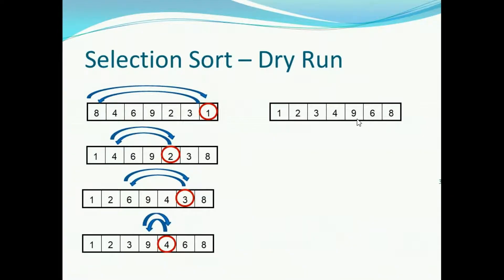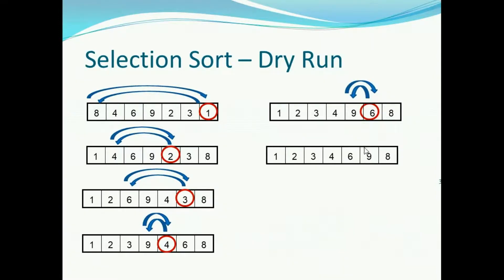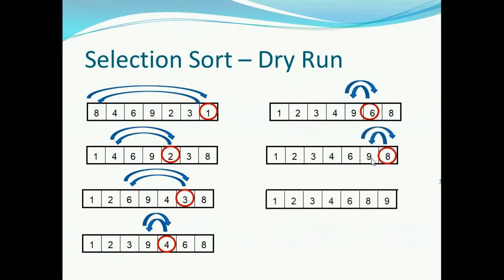So the resulting array will be this. Now the fifth smallest element is 6, so exchanging it with the fifth place element. We will be getting the resulting array something like this. Now the sixth smallest element is 8, so exchanging it with the sixth place element. We will be getting something like this.